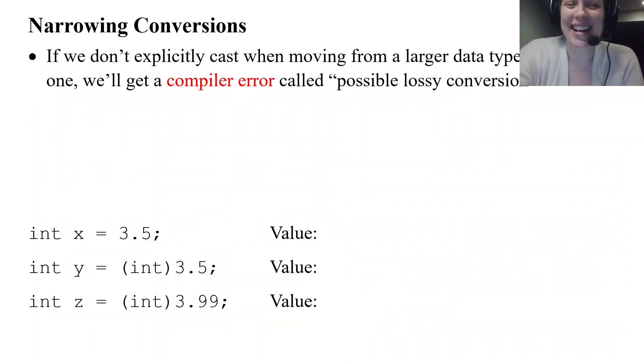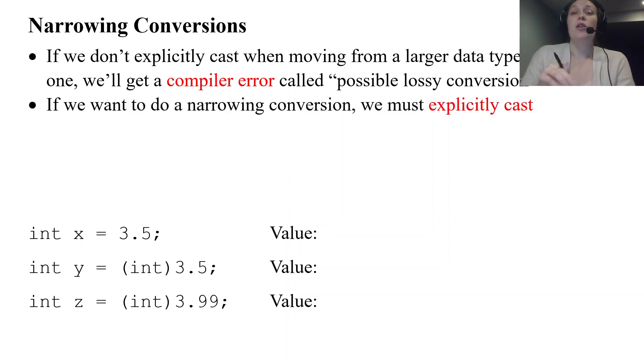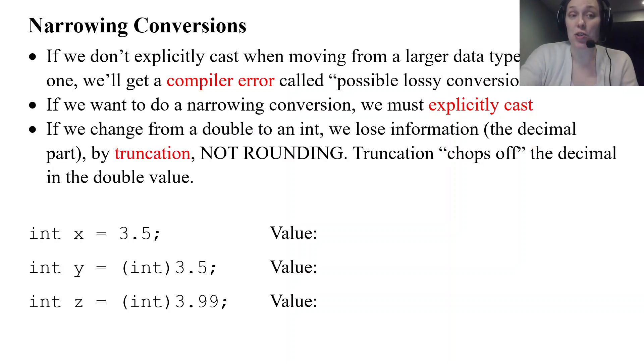Here's a narrowing conversion example. If we want to move from that larger data type to a smaller one, double to an int, int to a short, whatever it may be. If we try to do it as we saw implicitly we get a compiler error. We must explicitly cast and use a numeric cast. Now if we explicitly cast and we want to go from a double to an int, we do lose information because we're going from a bigger piece to a smaller piece. So if we're trying to fit a big box into a small box, we crumple it up and try to fit it in. You're going to lose information. And what you lose going from a double to an int is the decimal part by what we call truncation.